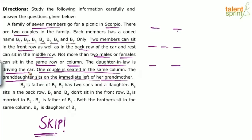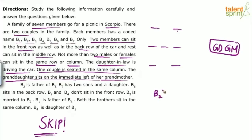There are clearly 3 generations in this family. The granddaughter sits immediately to the left of the grandmother, so these are 2 consecutive persons. Now B2 is the father of B5 — B2 is a male person. The gender of B5 is not known; B5 can be male or female. The usual confusion is assuming B5 is a son, but gender is not stated. B2 is the father, B5's gender remains unknown.